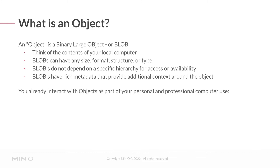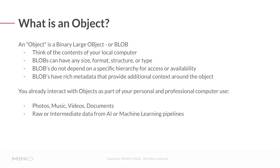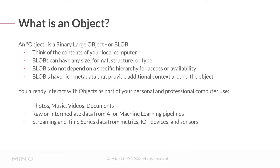You already interact with objects as part of your personal and professional computer use. These are photos, music, videos, and documents. They're the raw or intermediate data from AI or machine learning pipelines. It could be streaming and time series data from a metrics generator, IoT devices, or sensors. It could also be archival backups from applications or dedicated backup software. What groups all of these together is that they have every attribute of a blob — no limitation on size, format, structure, type, or hierarchy — and all have associated metadata that is critically important for identifying what that object is and its context.